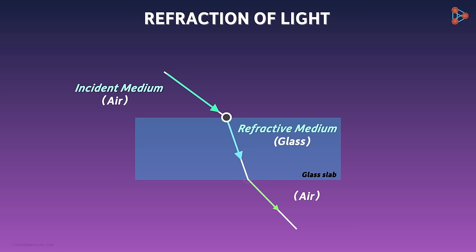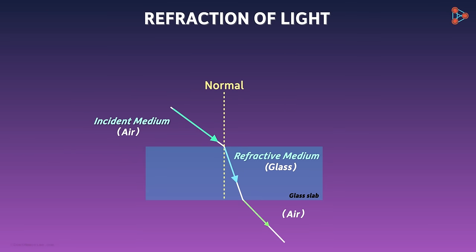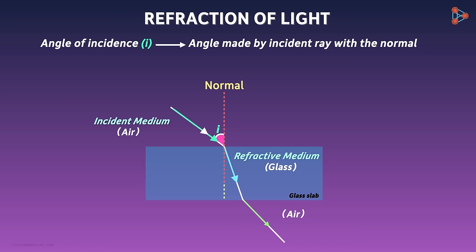Let us draw a line perpendicular to the surface at this point of incidence. This line is also called a normal. What is this angle called? It's called the angle of incidence and is denoted by the letter I. It is an angle made by the incident ray with the normal.